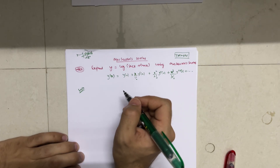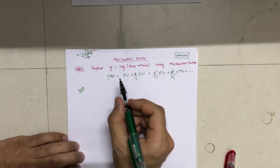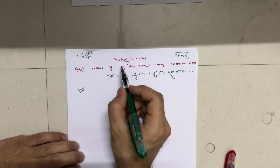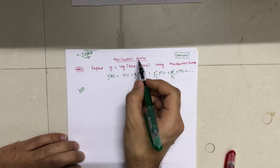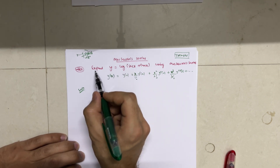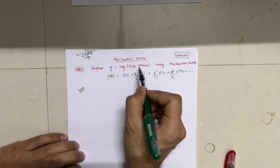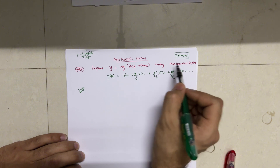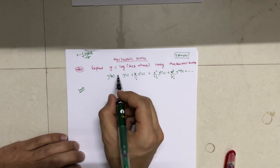Welcome students. In this video I will be discussing a super important question from the Maclaurin series: expand y = log(sec x + tan x) using the Maclaurin series. It is the most frequently asked question.